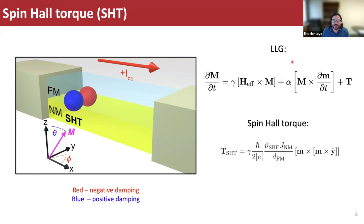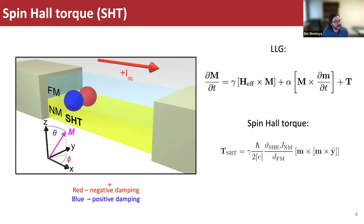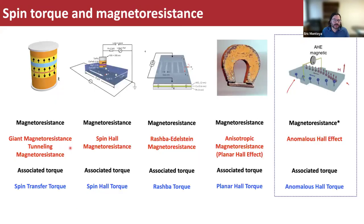All of these spin torques modify our LLG and have different forms. The spin hall torque depends on the spin hall angle, which characterizes the charge-to-spin conversion efficiency, and the current density flowing in the normal metal. It's inversely dependent on the thickness of the ferromagnet. For a magnetization pointing in the y direction, this leads to large negative damping, and for reversed magnetization, large positive damping, dying off away from the y axis. That's the spin hall torque in a quick nutshell.